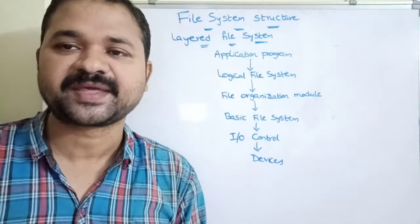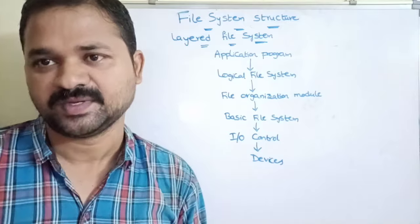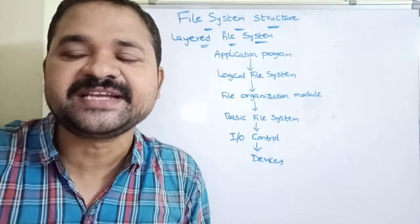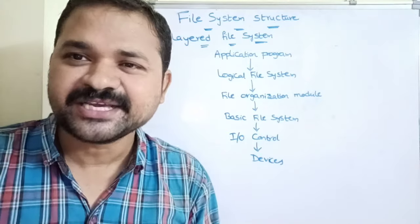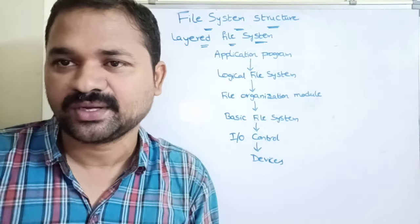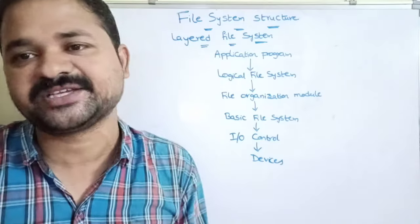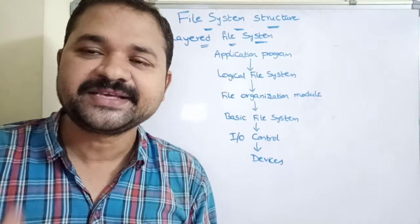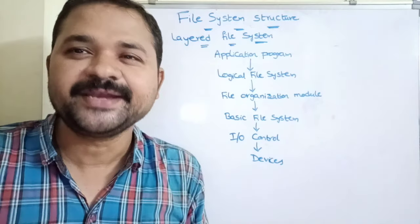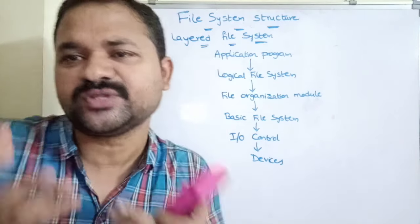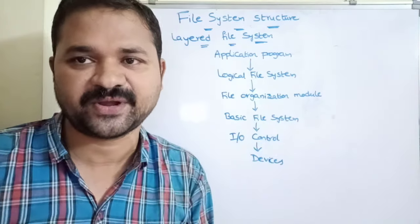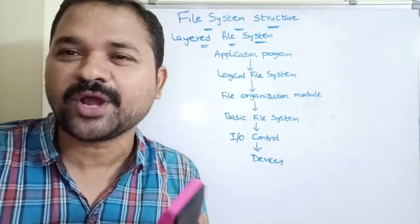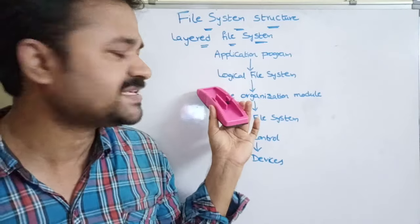The program developed by the user is known as the application program. It is nothing but the file written by the user. For example, if we want to take a printout, that program is our application program. If we have written a C program, that program is our application program. So an application program is essentially a program or file.